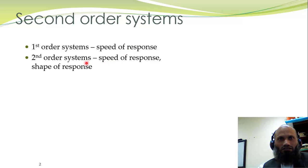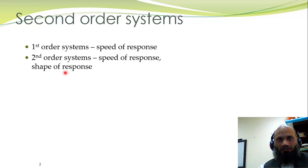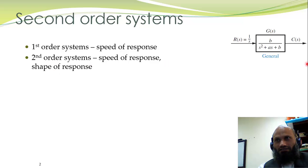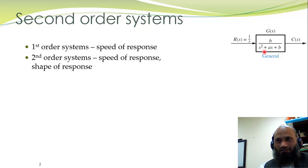For second order systems there are two parameters: the speed of the response and also the shape of the response. Different systems can have different shapes of response, which we shall discuss in today's lecture. A second order system can be described by a transfer function whose denominator polynomial has degree 2, which is why we call it a second order system.